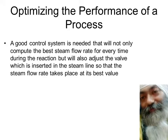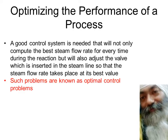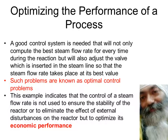A good control system is needed that will not only compute the best steam flow rate at every moment while the reaction is going on, but will also adjust the valve inserted in the steam line so that the steam flow rate takes place at its best value. These kinds of situations are known as optimal control problems, where the objective is optimizing the performance of a process. This example indicates that the control of steam flow rate is used not to ensure stability or eliminate external disturbance, but to optimize the economic performance — ultimately, profit maximization. This is the third and last objective of using process control.